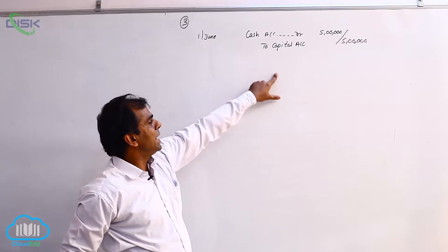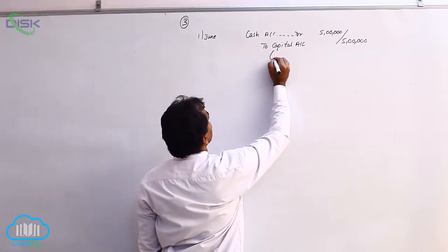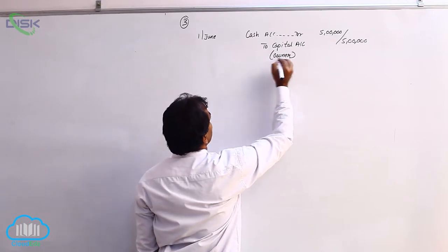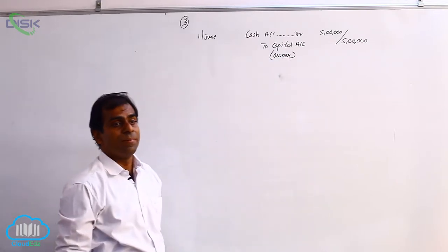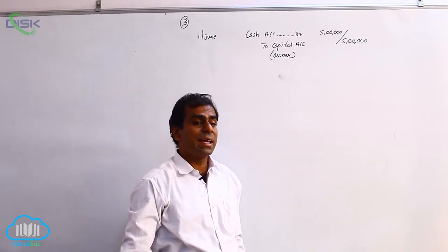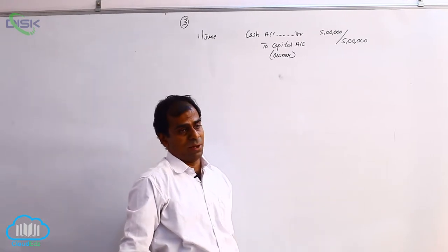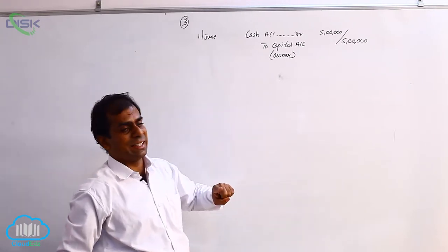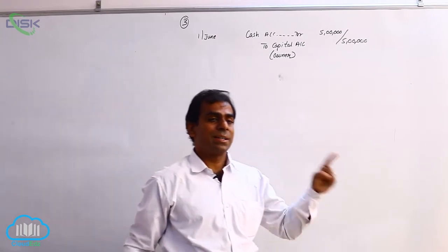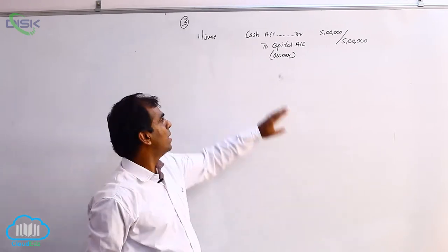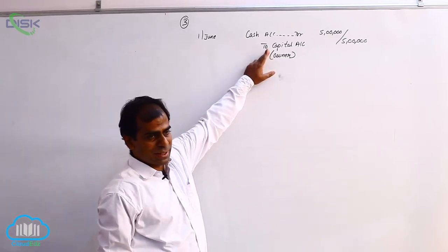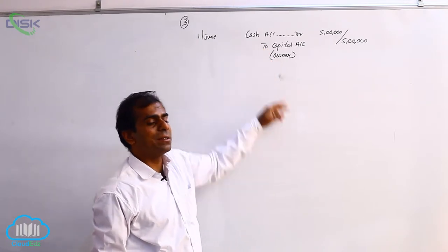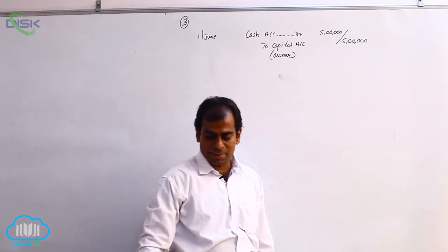Why are we crediting capital? We discussed that capital represents the owner. The owner is the giver of 5 lakhs cash to the business. The owner comes under the category of personal account, which we represent with the word capital. So capital is a personal account, and using the personal account rule — credit the giver — we have credited capital. The narration would be: being business commenced.